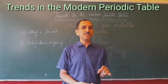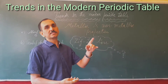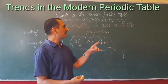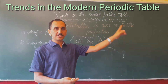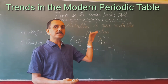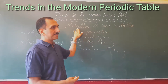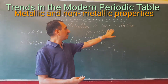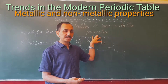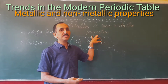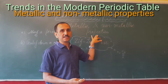Hello everyone, today we are going to start the next topic on trends in the modern periodic table. This part is about comparing metallic and non-metallic properties in the modern periodic table, in a group and along a period.